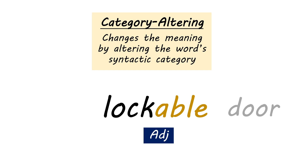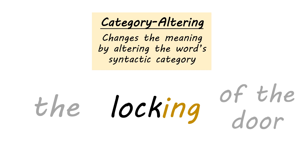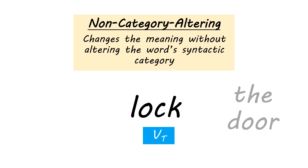Another example of category-altering morphology: we can use the word 'locking' to describe a noun depicting an event. You can put the word 'the' in front of 'locking' — 'the locking of the door' — which tells you it is syntactically acting as a noun phrase. This has transformed our transitive verb into a noun phrase, because we can place a determiner on the front of it and get a determiner phrase out of it. So we've turned something that was a transitive verb into a noun phrase.